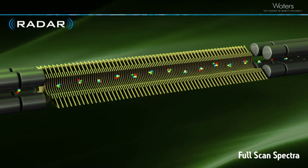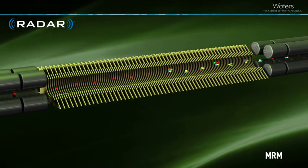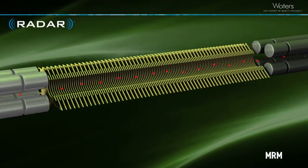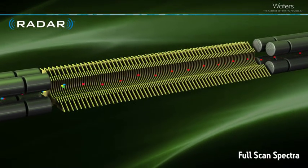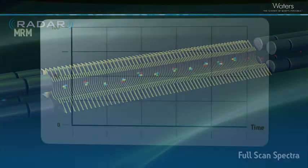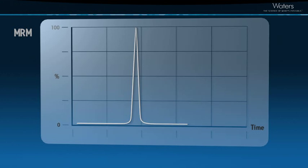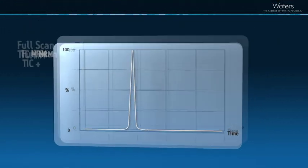In Radar mode, the Zevo TQS rapidly alternates between MRM and full scan MS acquisition modes. You can track your target analytes with precision in MRM mode while at the same time scanning the background for all other components.